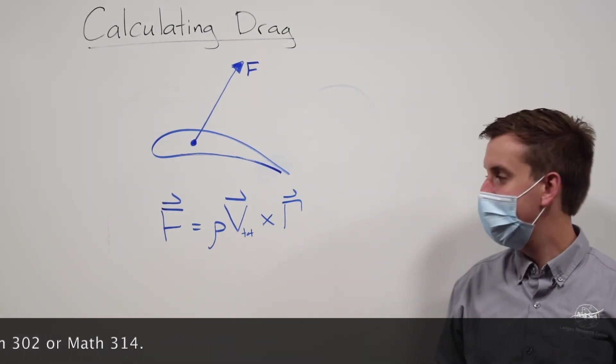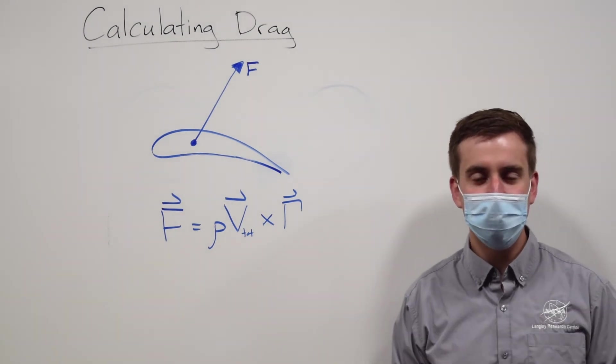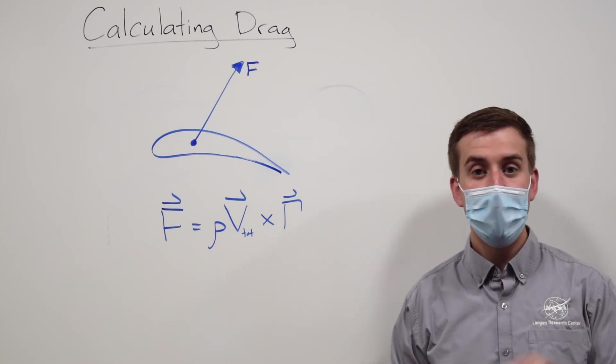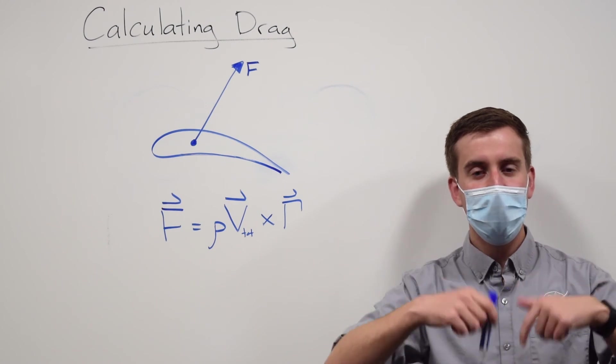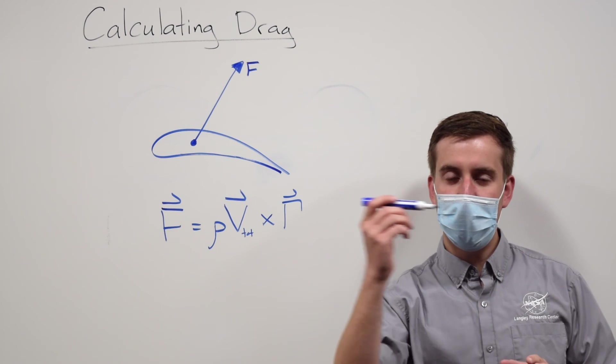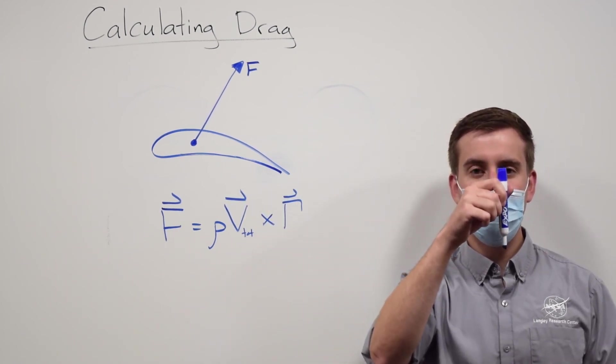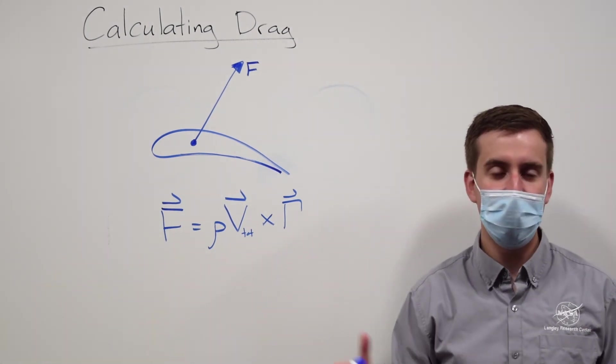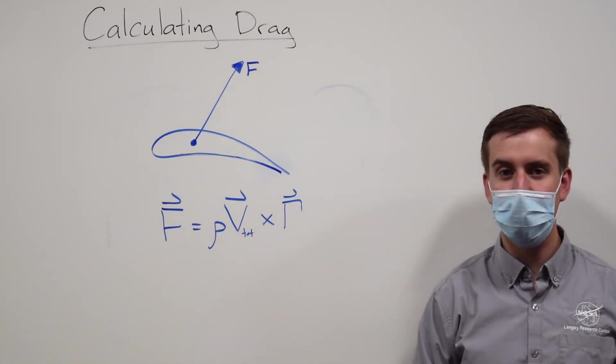If we instead replace some of those terms, we keep the density, but now we use what's called the total velocity. The total velocity is the free stream velocity, that's the speed that the airplane is traveling at, plus the downward velocity of the air that's getting pushed down by the wings. So we have the free stream velocity coming in, and we have the velocity of the downwash going down, and that's the total velocity of the air.